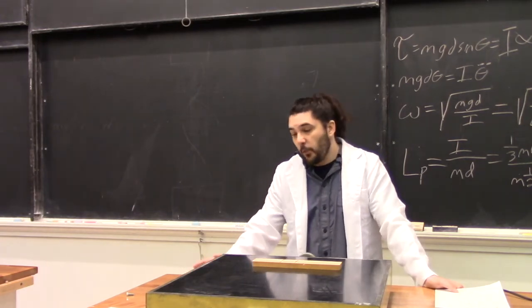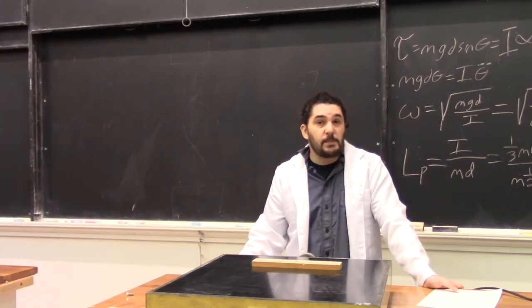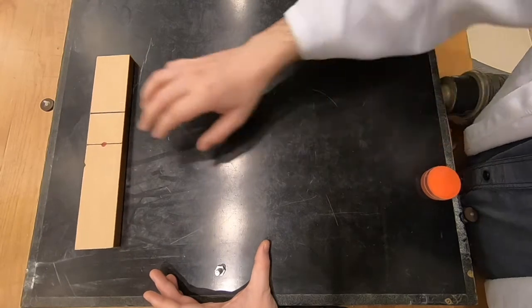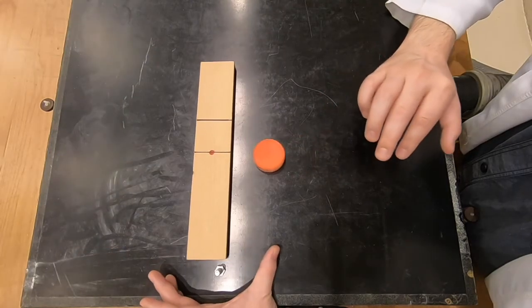However, depending on where it's hit, there are different amounts of torque and spin imparted. You'll notice a collision along the center line imparts no torque. The rod doesn't spin at all.